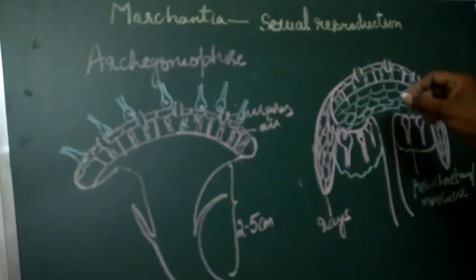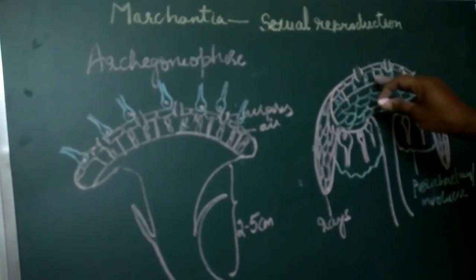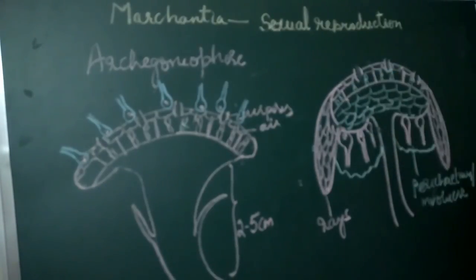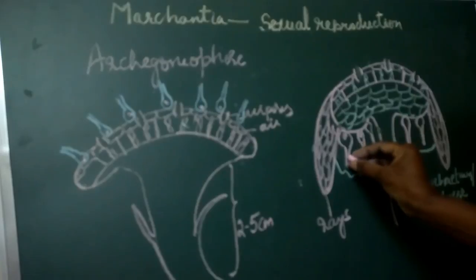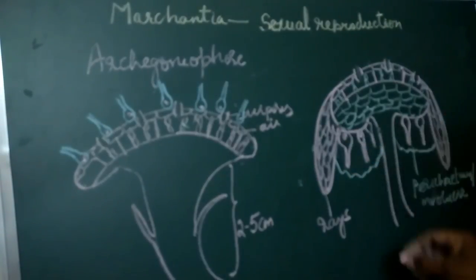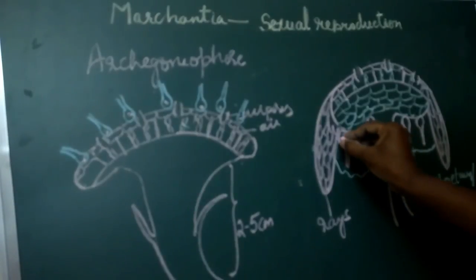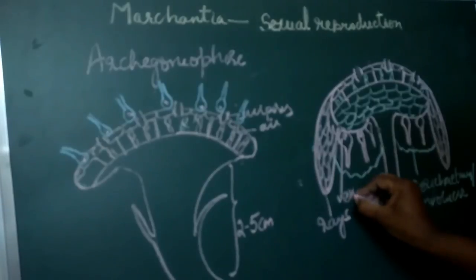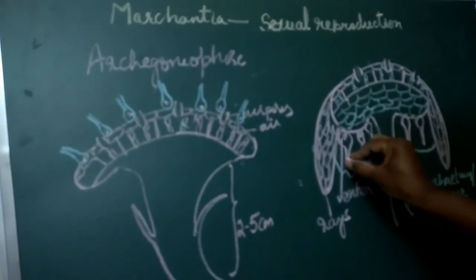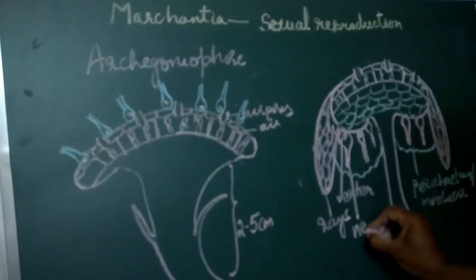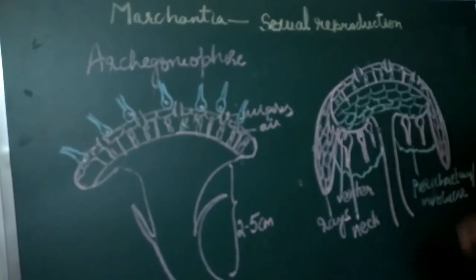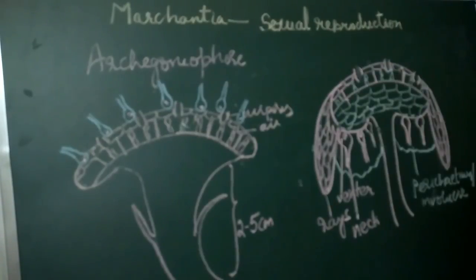The internal structure of the mature peltate disc is similar to that of the internal structure of the vegetative thallus. The mature archegonia are towards the periphery and are covered by a perichaetium. The venter and the neck of the archegonia are visible. Let us now learn about the development and structure of the archegonia.